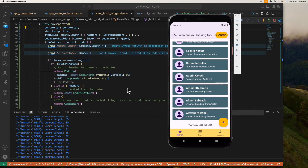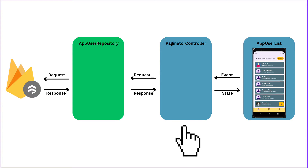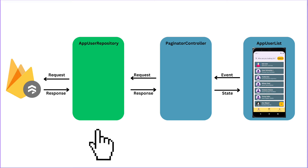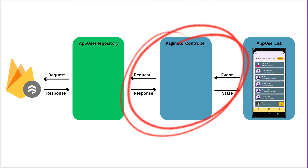This is the feature we're going to achieve. But before we dive into coding, let's look at the main components we need. We definitely need the UI to display the list of users, and the paginator controller class that's responsible for fetching the first batch of users and managing the state of the UI. We also have the AppUserRepository class where we'll define the API we need for fetching the list of users. So let's start constructing our paginator controller class.